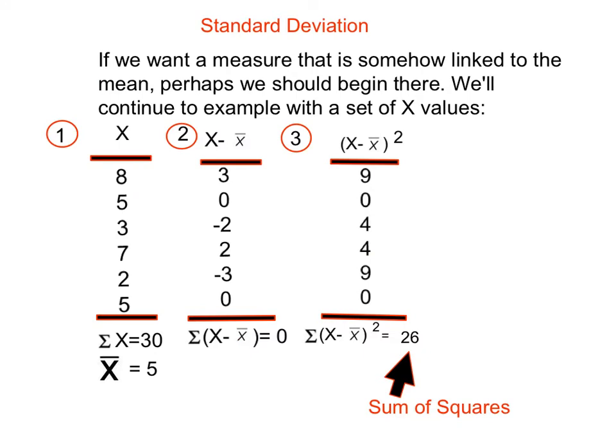If we want a measure that is somehow referenced to the mean of the distribution, we probably ought to begin there. So I'll continue the example with this set of numbers. If we look at column one, we have a set of X values, and first thing we want to do is calculate the mean. Add up all the values and divide by 6, which is the n, and we get a mean of 5.